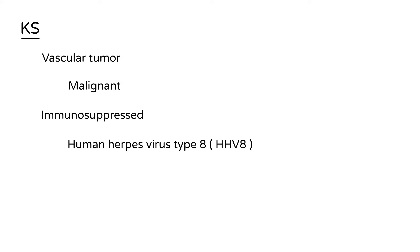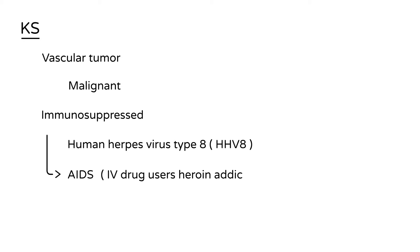When we say immunosuppressed patients, what type of patients are we talking about? Very commonly AIDS patients who have a very low immune system, and also patients who are at risk of developing HIV and AIDS — for example, patients who are IV drug users such as heroin addicts. Another category of immunosuppressed patients are organ transplant recipients, because due to the medications they're on, their immune system can be suppressed.